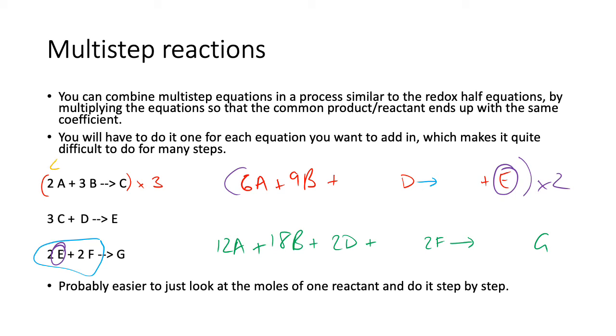So if I said that, if I have 4 moles of A, I'm going to make 2 moles of C. If I have 2 moles of C, I'm going to make 2 over 3 moles of E. Then I have 2 over 3 moles of E, I'm going to make 1 over 3 moles of G. And so it's a 4 to 1 third ratio, which is, I think, a 12 to 1 ratio. So that's the way I would do it, but you can do it this way if you really feel like it.